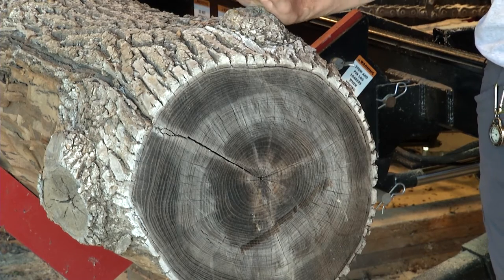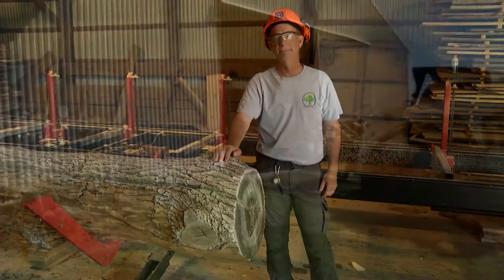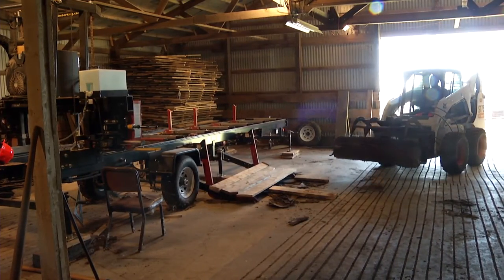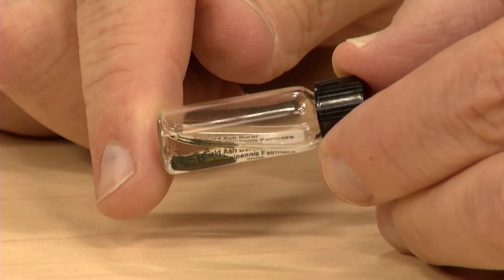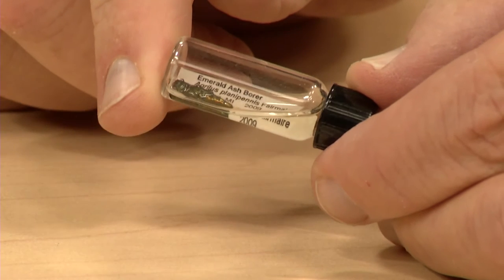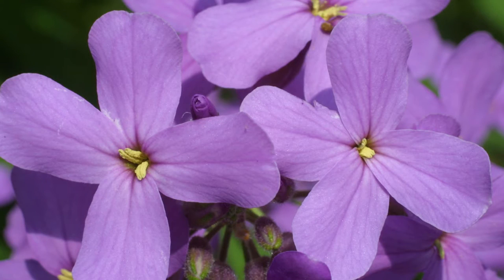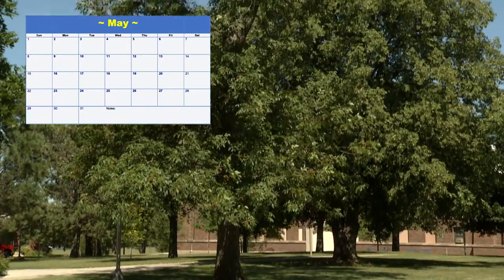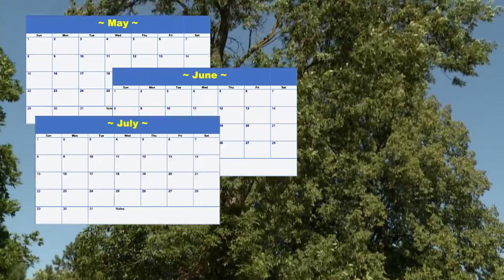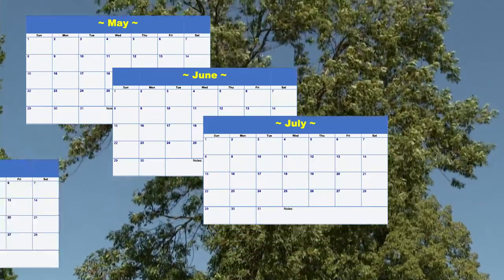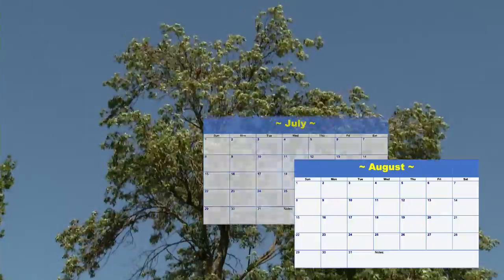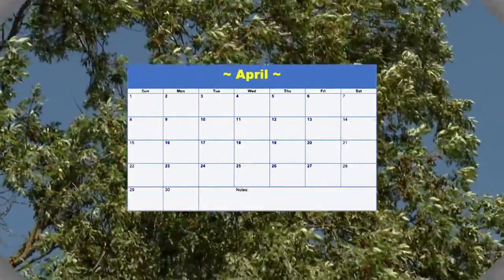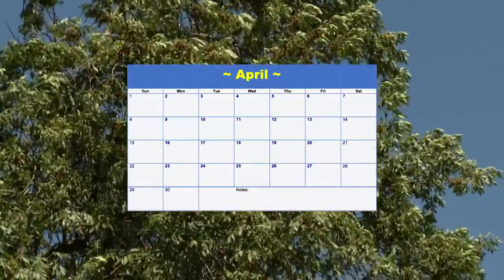Working with infested trees requires some precautions — we don't want to further spread the problem. The most common means of moving emerald ash borer between communities is through the transportation of infested wood. Emerald ash borer begins emerging from infested trees in May, about when Dame's rocket is in bloom. Emergence can continue until almost Labor Day, so we want to avoid felling and transporting infested ash trees during this time period.